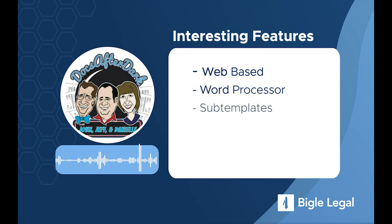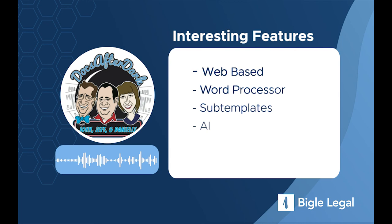Another feature they showed me is an AI component. If you have a template and you upload it, it'll actually try to find the different fields in the document for you. It's an interesting feature — I haven't had a chance to play with it that much yet, but the demo was impressive. It's an interesting ability for AI to look at your document and do some pre-coding for you.